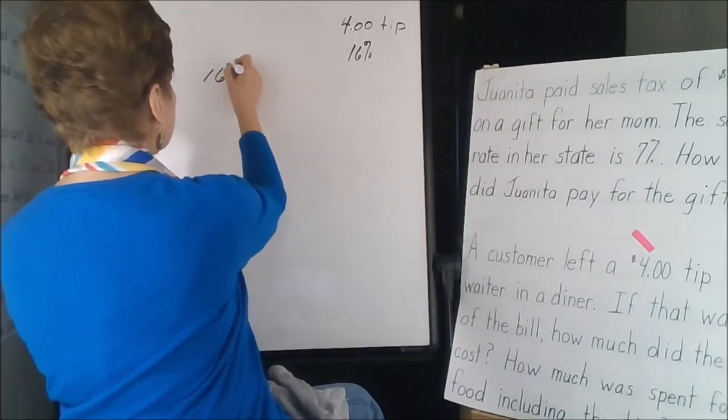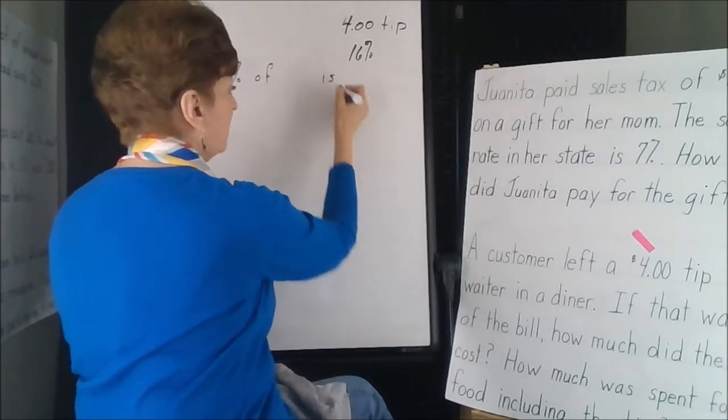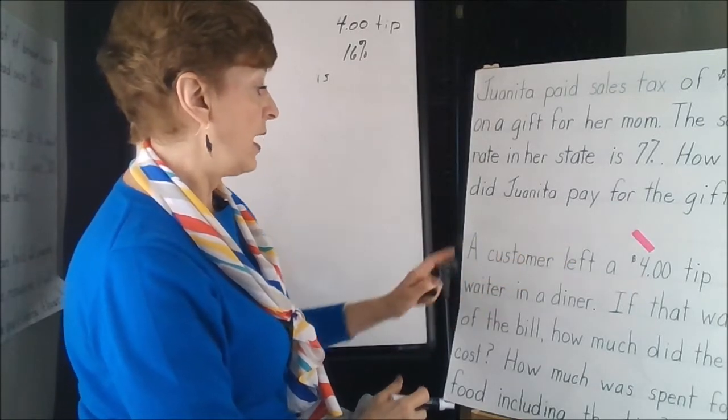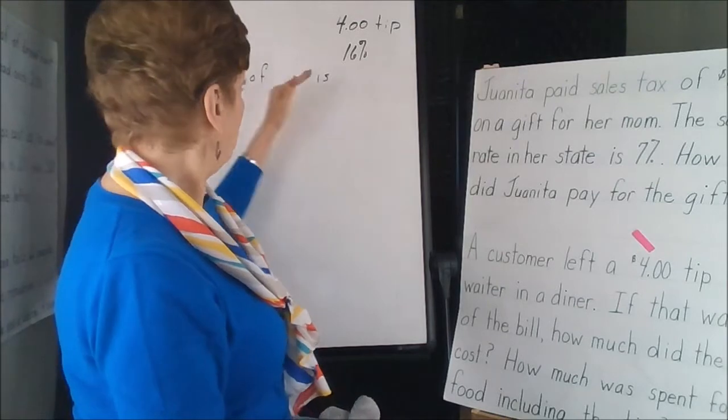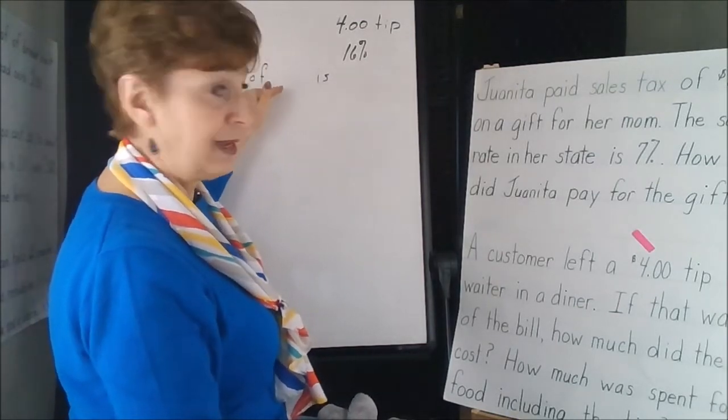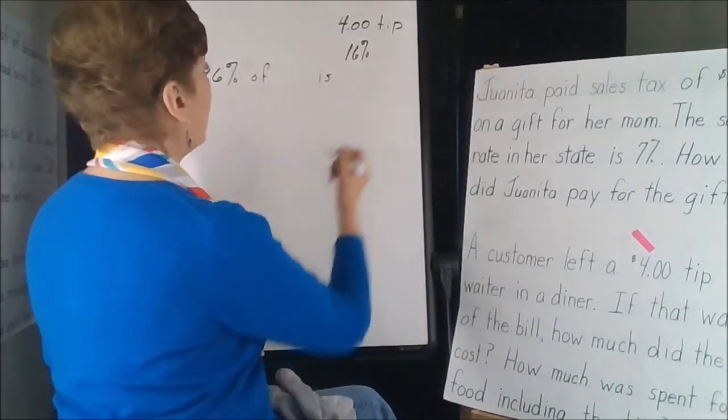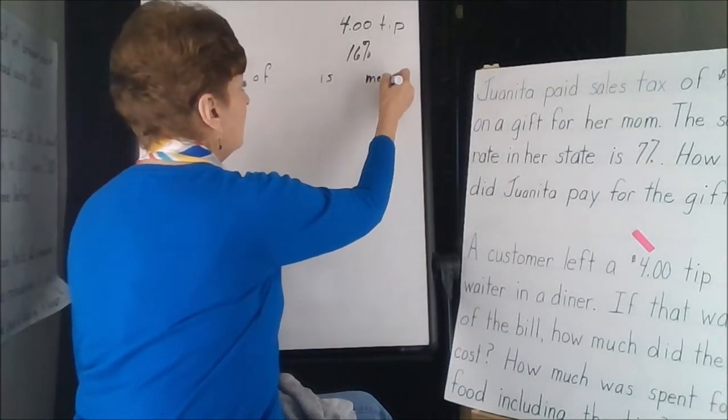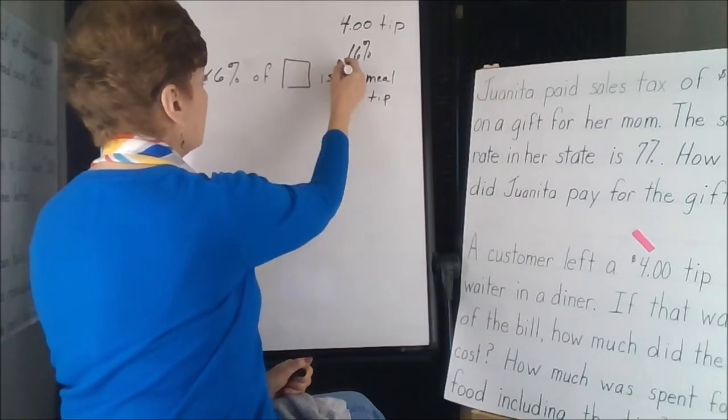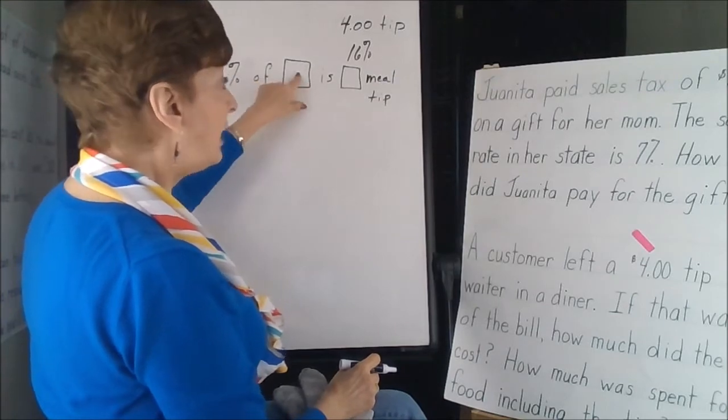16% of is. It's talking about the customer leaving a tip for the waiter. Well, would that be the 16% of the tip or 16% of the meal? Because that's what it says here. How much did the meal cost? So we've got meal and we have tip. Those have to go in this position or this position. So 16% of the meal is the tip.